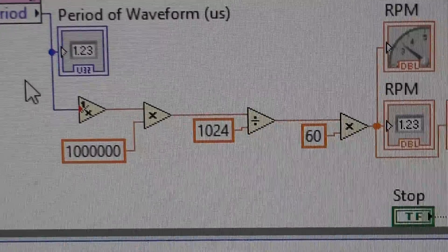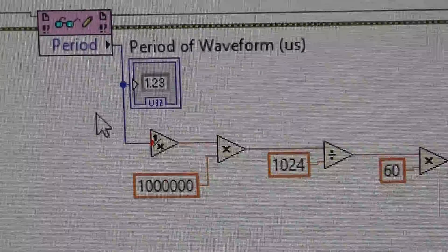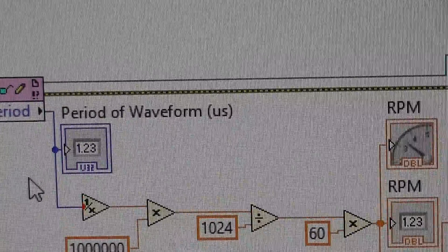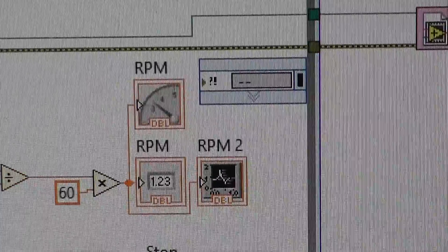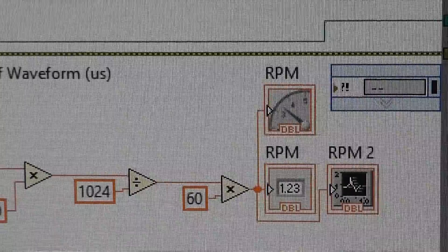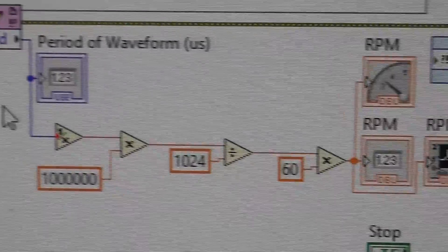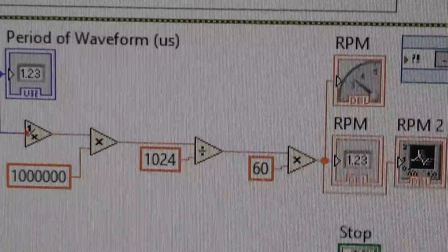And that gives me pulses per second. And then I have to multiply by 60 to get revolutions per minute.